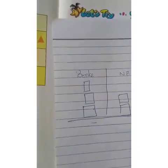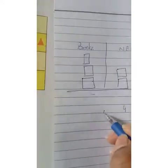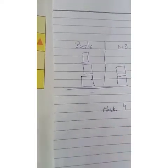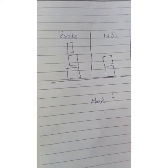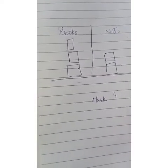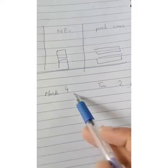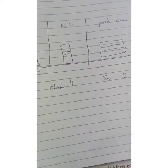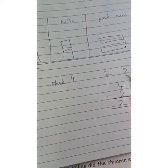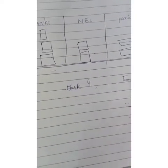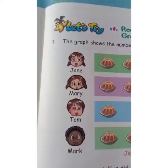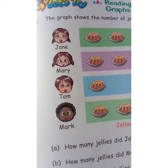For example, if there are 4 jellies for Mark and 2 jellies for Tom, how are you going to find out how many more did Mark eat? You are going to subtract: 4 minus 2 equals 2, which means Mark had 2 more jellies than Tom. Same thing goes for less. So you are going to do these pages on your own. Now open page number 229.